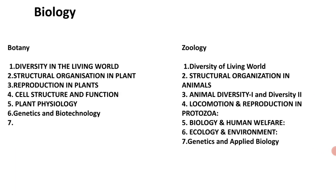For botany, the important units to focus on are: diversity in living world, structural organization in plants, reproduction in plants, cell structures, plant physiology, genetics, and biotechnology. These units are very important. Since most questions in the engineering paper were asked from the textbook, as a bio student the questions will likely come from the textbook too — so read these units in detail. The summary and content are very helpful for both botany and zoology.